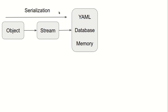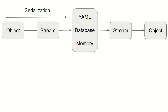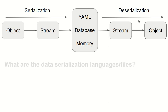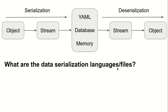Now if the data is received by the application, it will be converted back into a stream, and from the stream the data will be converted back into an object. This is called deserialization.